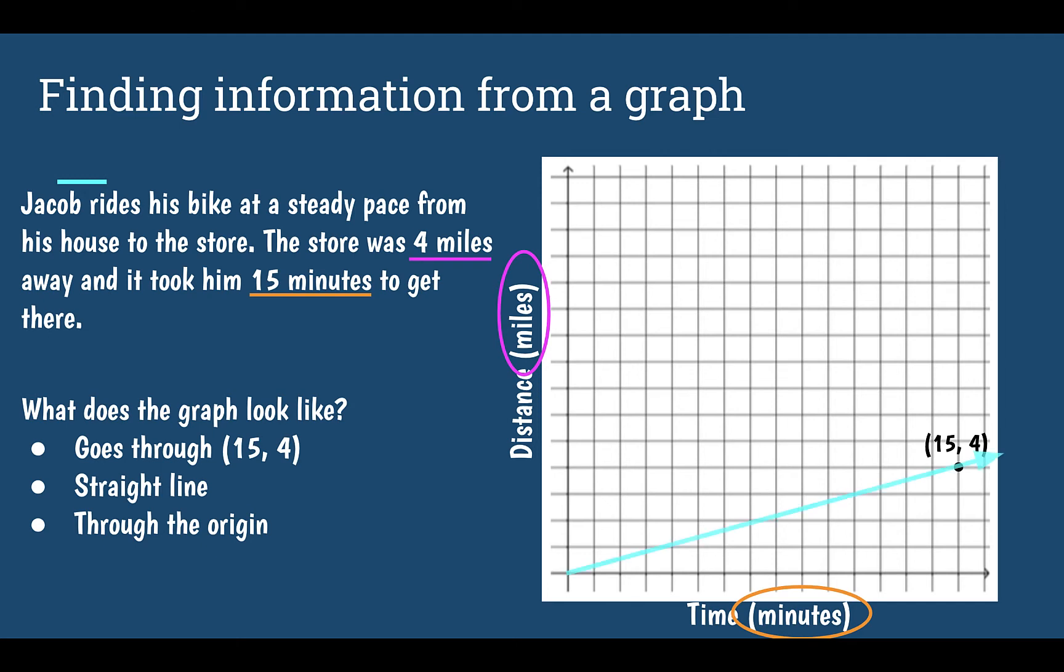So what that would end up looking like is a line that goes from the origin straight to that point that we know. So if you're given one point, in order to figure out what the graph looks like you just draw a line through that point and the origin, make it a straight line.